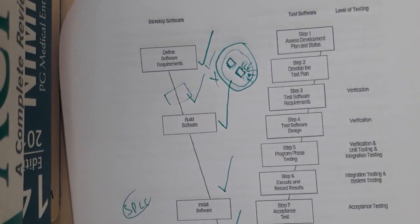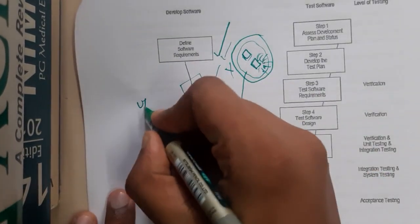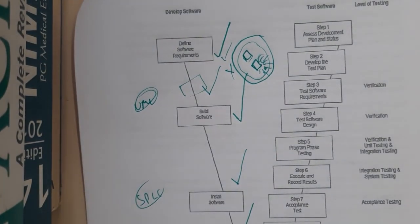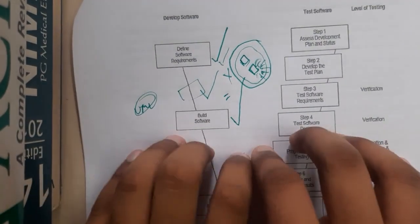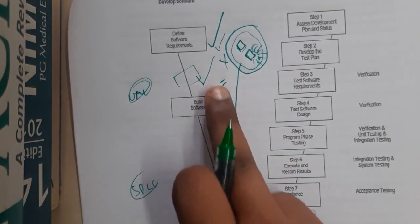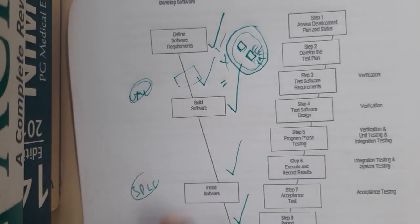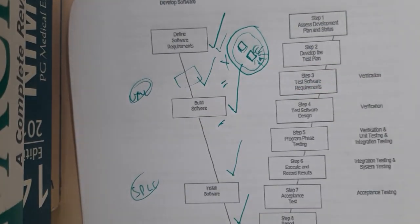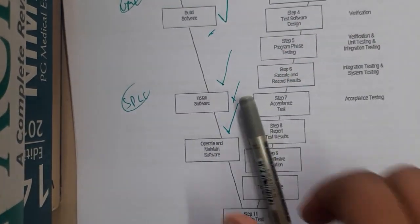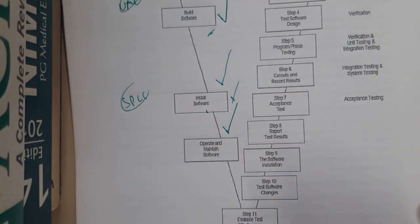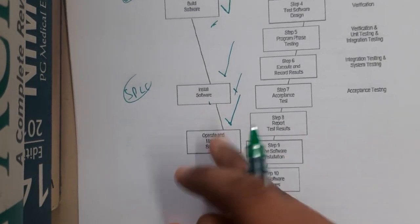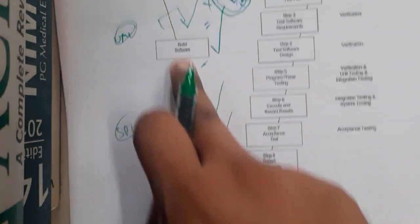After requirement gathering, designing is the next important step — drawing UML diagrams like class diagrams, activity diagrams, deployment diagrams — so it is easy for the developer to code the application. Once designing is done, the software moves to the development stage where coding and testing happen. Then it is deployed to the client side, and maintenance follows to fix bugs found by users.